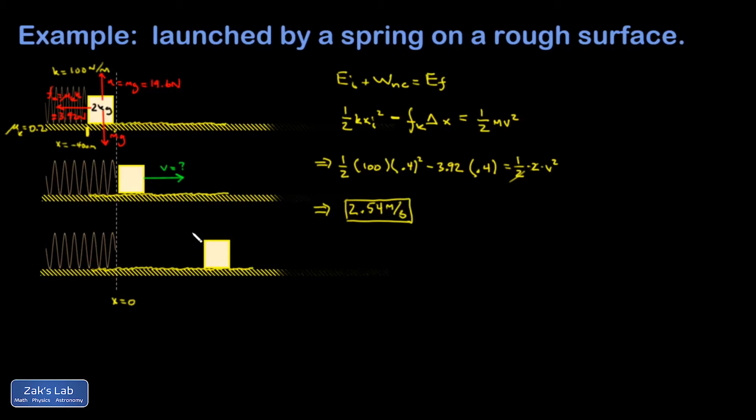The second question is, how far does this thing slide before it comes to a stop? If there was no friction, it would just keep going forever. And I'll just call that X. But there is friction, so it's going to slide to a stop.